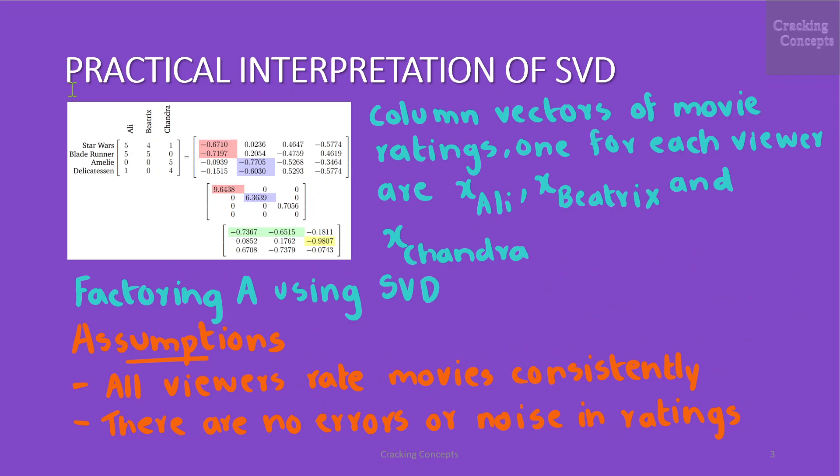This is the given matrix. The column vectors of movie ratings one for each viewer are x_Ali, x_Beatrix and x_Chandra.